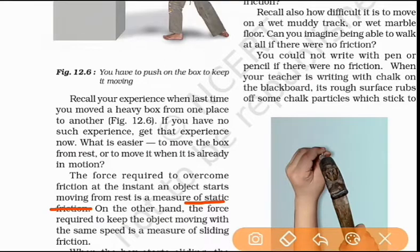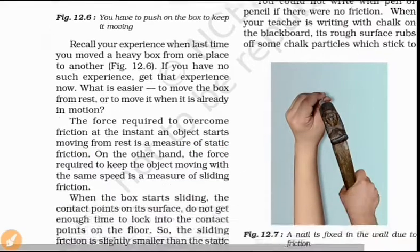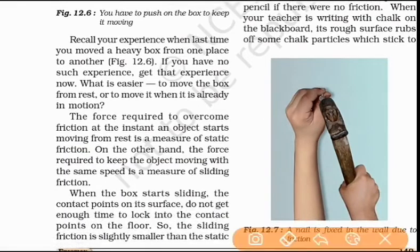Once the box starts to move — when we push the box and it begins sliding — that is called sliding friction. Sliding friction acts when the object is already in motion across the surface.